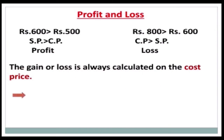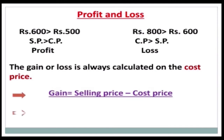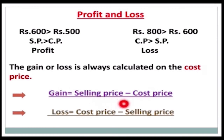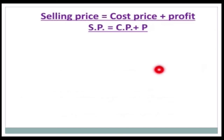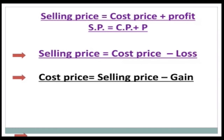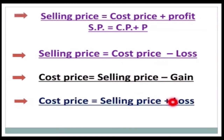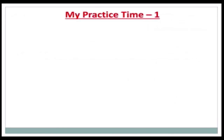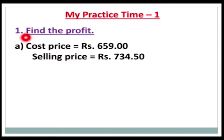Here are the formulas we need to learn. Gain equals selling price minus cost price. Loss equals cost price minus selling price. Selling price equals cost price plus profit. Selling price equals cost price minus loss. Cost price equals selling price minus gain. Cost price equals selling price plus loss.